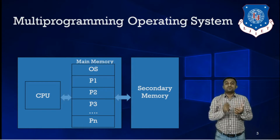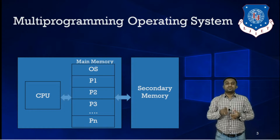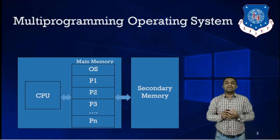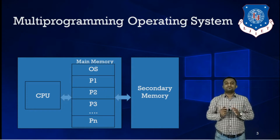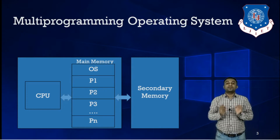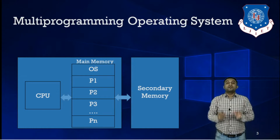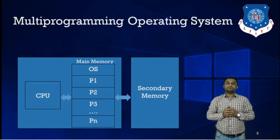So the term is multiprogramming operating system. One might think: can more than one process be executed concurrently simultaneously? No — that answer is incorrect. By having a uniprocessor machine, at a time only one process can be executed.